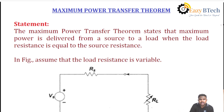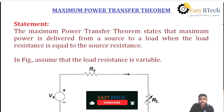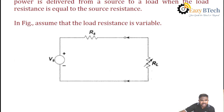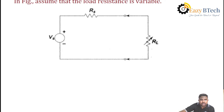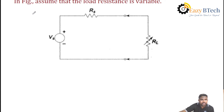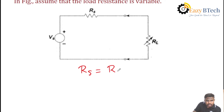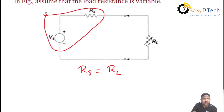You must simplify the given circuit. At the given load terminals, you must find out the Thevenin's equivalent circuit. The equivalent circuit consists of Vs as the source voltage, Rs as the source resistance, and Rl as the load resistance. The combination of Vs and Rs forms Thevenin's circuit.